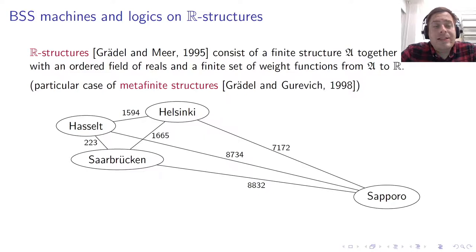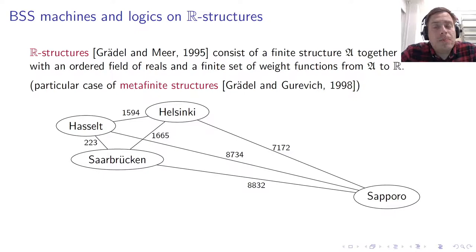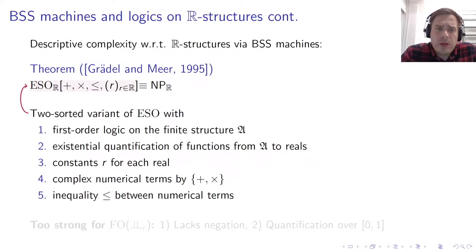Descriptive complexity on BSS machines is not a new topic. Grädel and Meijer in the mid-1990s related logics on so-called R-structures with BSS computation. An R-structure consists of a finite structure together with an ordered field of reals and a finite set of weight functions from the finite domain to the reals. A probabilistic team is just a particular R-structure where the function is a probability distribution.